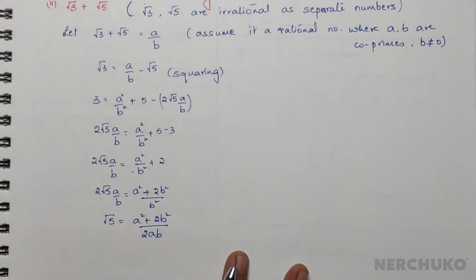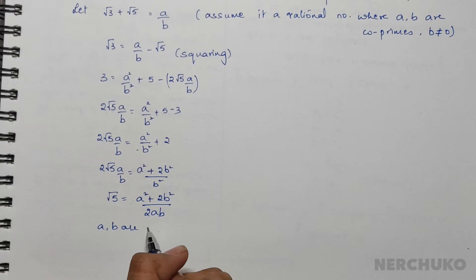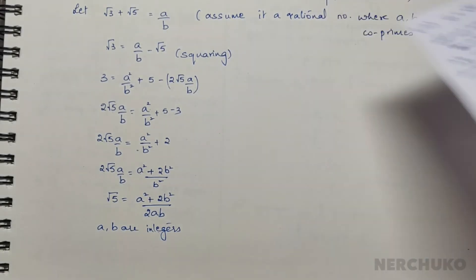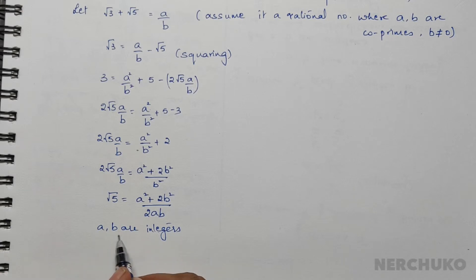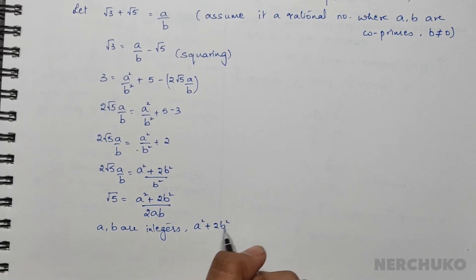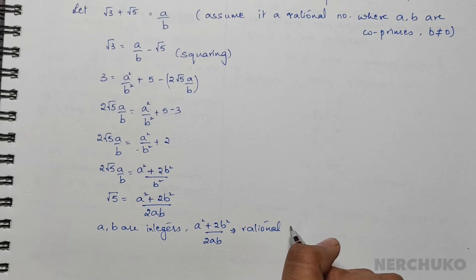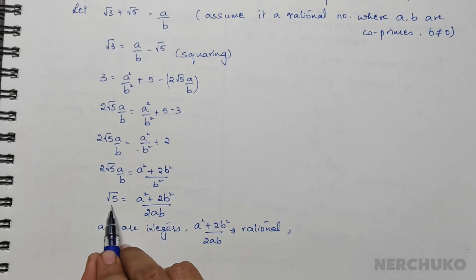Now a and b are integers as we have previously assumed. Therefore, that would make (a² + 2b²)/(2ab) a rational number, and this assumption would also mean that √5 is a rational number, since it is equal to (a² + 2b²)/(2ab).